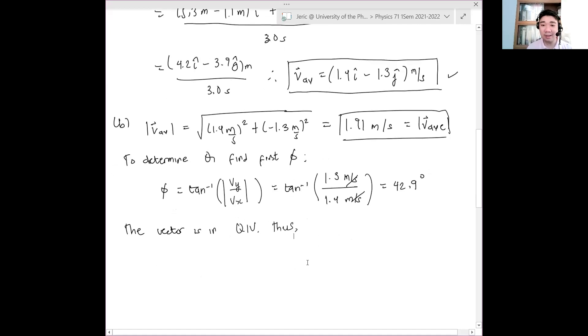what happens? Thus, what do you need to do to theta? Theta is just negative phi. Yes, you just negate it. So this is negative phi. And therefore, this is minus 42.9 degrees with respect to positive x. That is your answer. Okay?